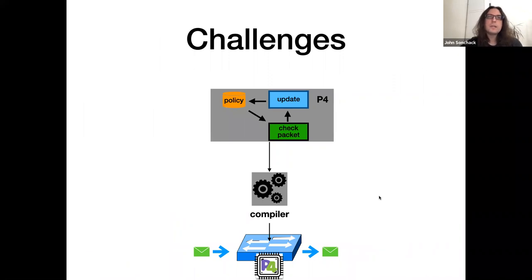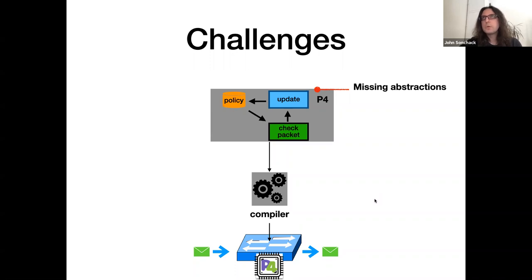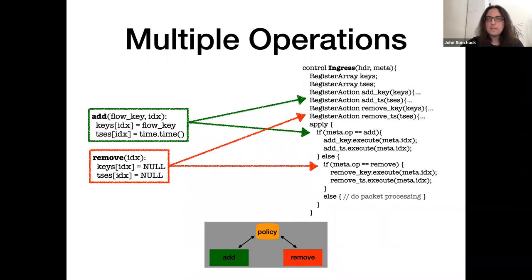To understand why, let's look at some of the challenges of implementing a data plane application in P4 targeting the Tofino with integrated control. The first general challenge is that P4 is missing a lot of abstractions important for control applications. If you think about control logic, there are usually multiple operations — multiple functions that have to happen. In a stateful firewall, you have both an add operation and a delete operation. Just supporting multiple operations on the same state in P4 is already tedious because you have to combine these operations into a single packet processing function.